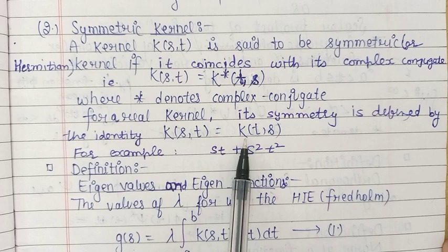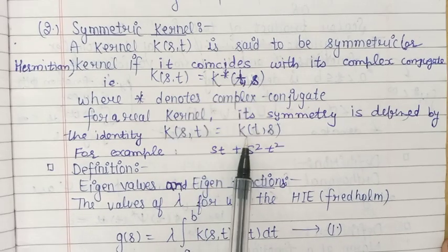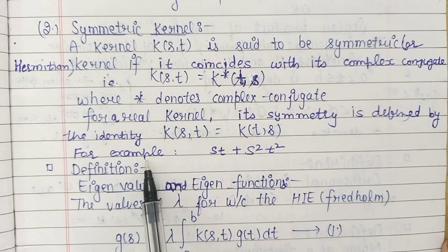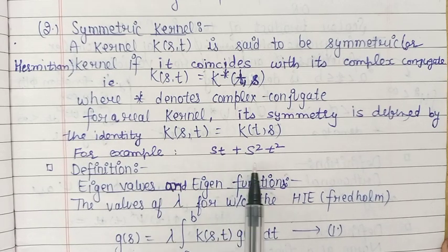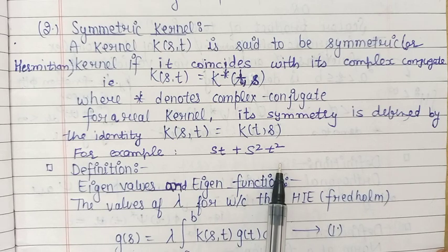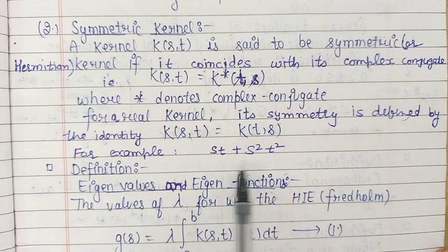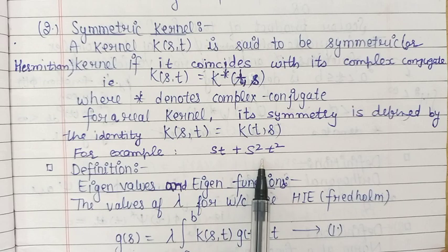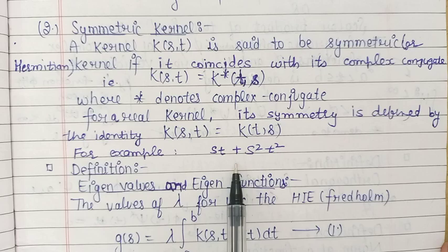A kernel k is said to be a symmetric kernel if k(s,t) is the same as k(t,s). For example, the kernel defined by st + s²t² is a symmetric kernel, because if we interchange s and t in this expression, the expression remains the same.